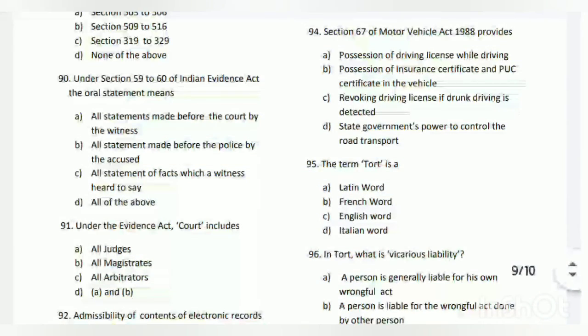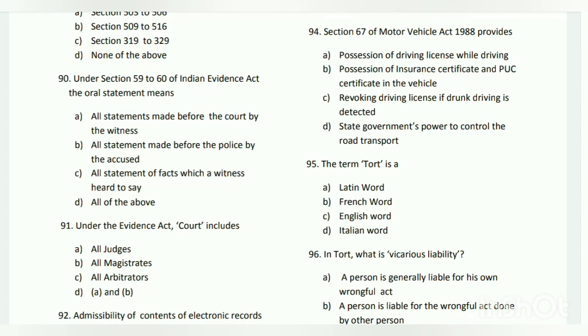Question number ninety-four: Section 65 of the Motor Vehicle Act 1988 provides what? The answer is D - state government power to control road transport.